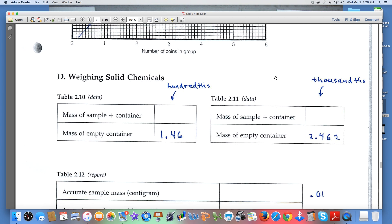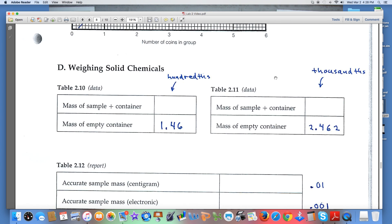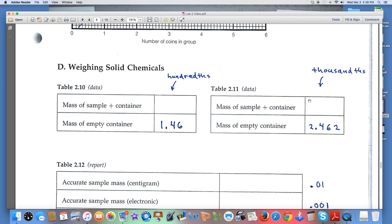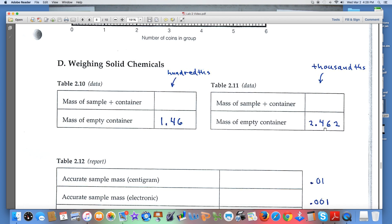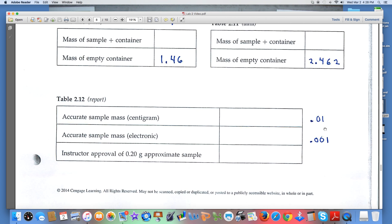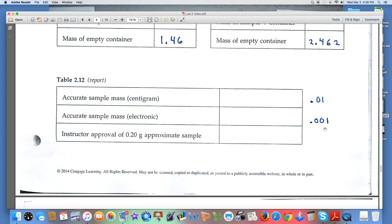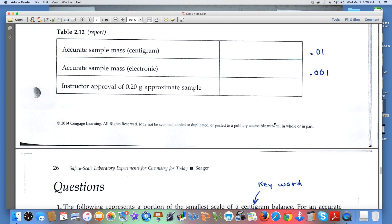Here's part D: weighing solid chemicals. Notice that in 2.10 you're using a centigram balance, so we'd want to make sure that these two measurements were to the hundredth. Table 2.11, we're using the electronic balance, so you'd want to make sure that we've got weights recorded to the thousandth. Then follow through with that as you go to the report page: numbers to the hundredth, values to the thousandth, and you're done.